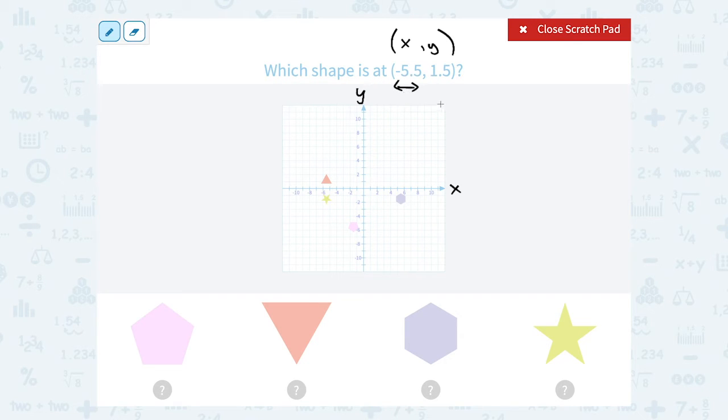We go to the right if it's positive, and to the left if it's negative. The second, or our y-coordinate, tells us how many to go up or down. If it's positive, we go that many units up, and if it's negative, we go that many units down.